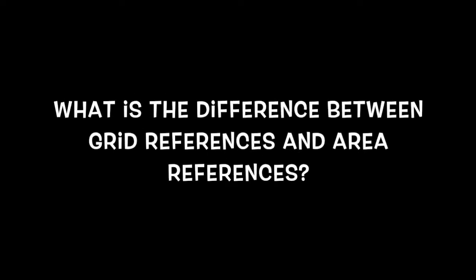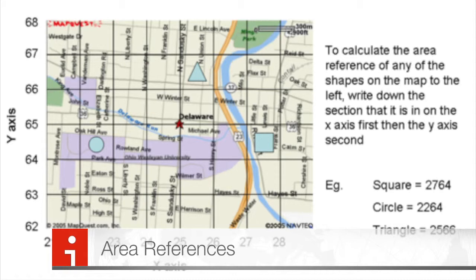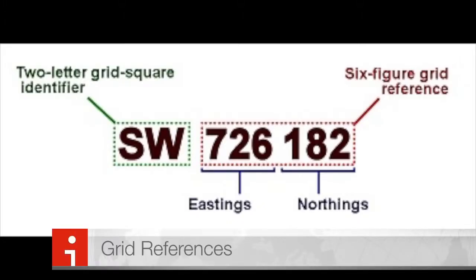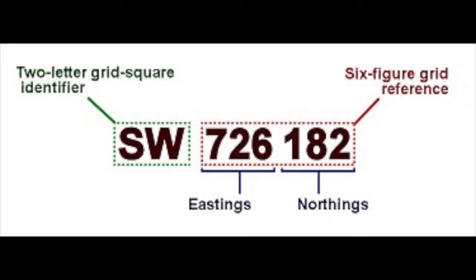What is the difference between grid references and area references? Area references are a four-figure numerical location point made up of a two-figure eastings reading and a two-figure northings reading. Grid references are six-figure numerical location points made up of a three-figure eastings reading and a three-figure northings reading.